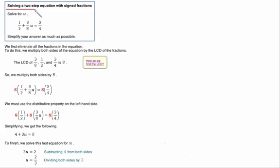So here we'll look at solving a two-step equation with signed fractions. We want to solve for u. So once again, it's kind of like our balance beam, but oh my gosh, fractions, those are terrible. I hate fractions. So what do we do about that?